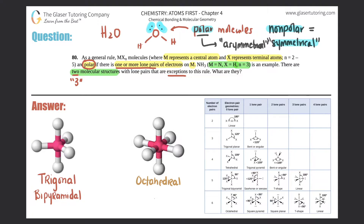Looking at the chart, we can cross off the columns with zero lone pairs since we need lone pairs present. The exceptions come from the trigonal bipyramidal electron geometry — which has five electron pairs — and the octahedral electron geometry — which has six electron pairs. We want to find arrangements that are as symmetrical as possible.